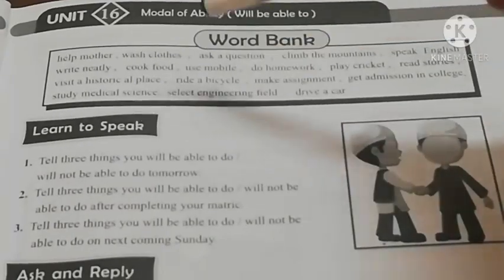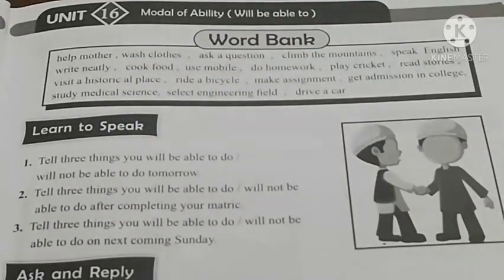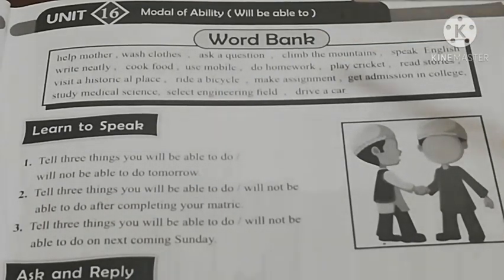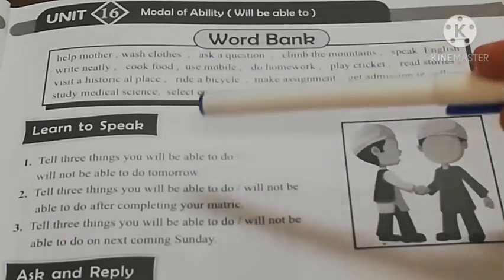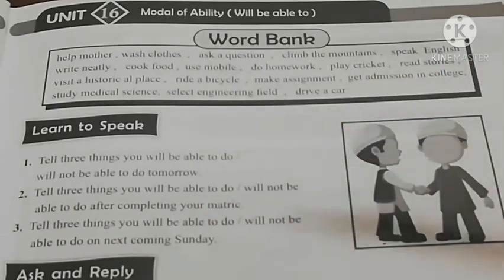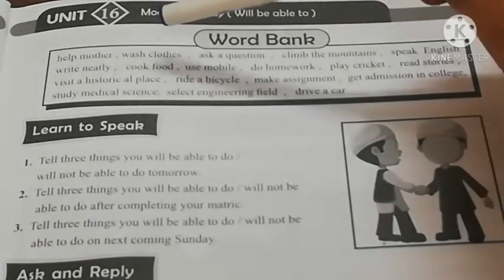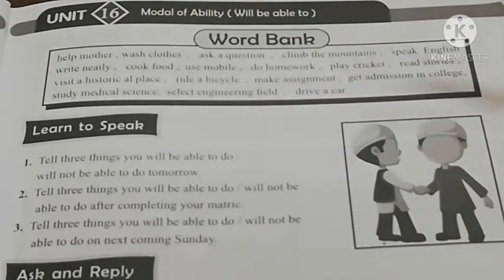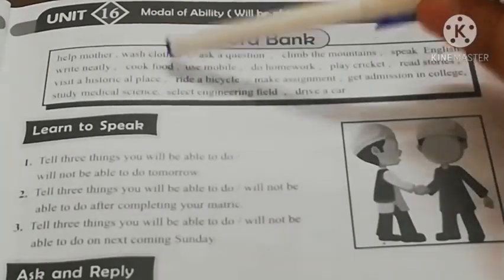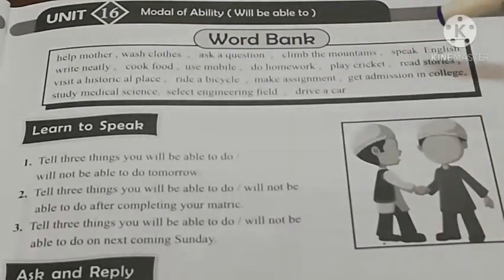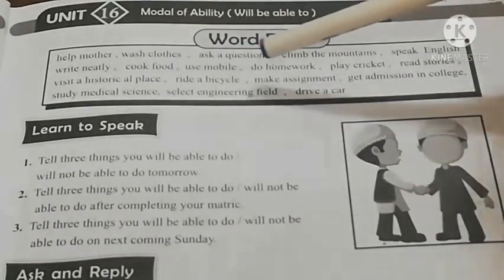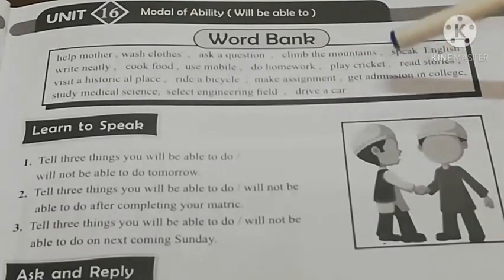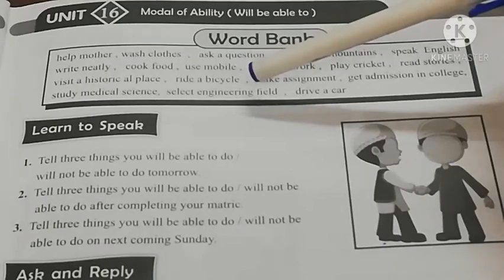In the Word Bank we have different phrases that are helpful for conducting the 'Learn to Speak' tasks. You will practice, learn, and memorize these phrases, then come back and conduct the activity. The phrases are: help mother, wash clothes, ask a question, climb the mountain, speak English, write neatly, cook food, use mobile, do homework, play cricket, read stories, visit a historical place, ride a bicycle, make assignment, get admission in college, study medical science, select engineering field, drive a car.